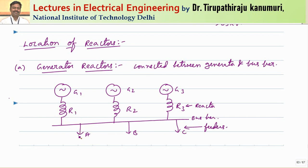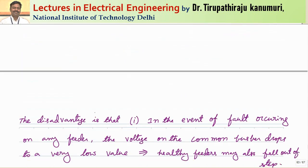The continuous voltage drop and power loss under normal conditions is one disadvantage. Under fault conditions, if a fault happens in one feeder, high fault current passes through the reactor, causing a very high voltage drop. Out of the generated voltage, the voltage appearing at the bus bar drops drastically. When bus bar voltage drops drastically, all healthy feeders are also affected because their voltage decreases too, potentially leading to system instability. Even though the fault is located on only one feeder, all other feeder voltages also decrease, causing them to become unstable or disconnect.